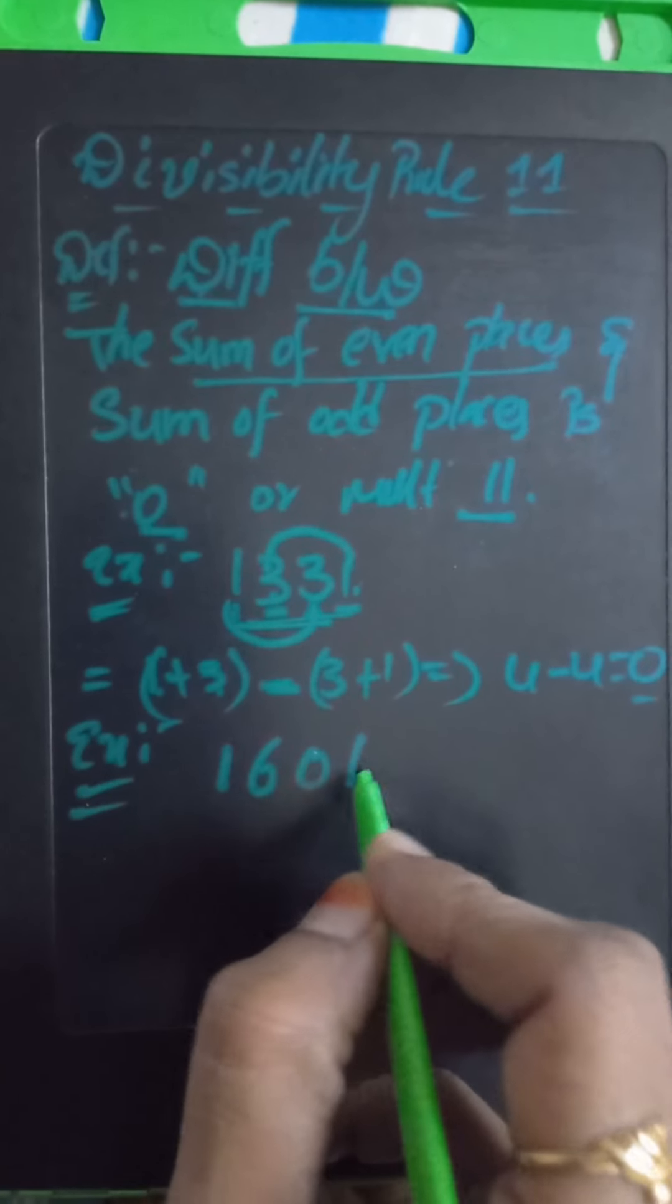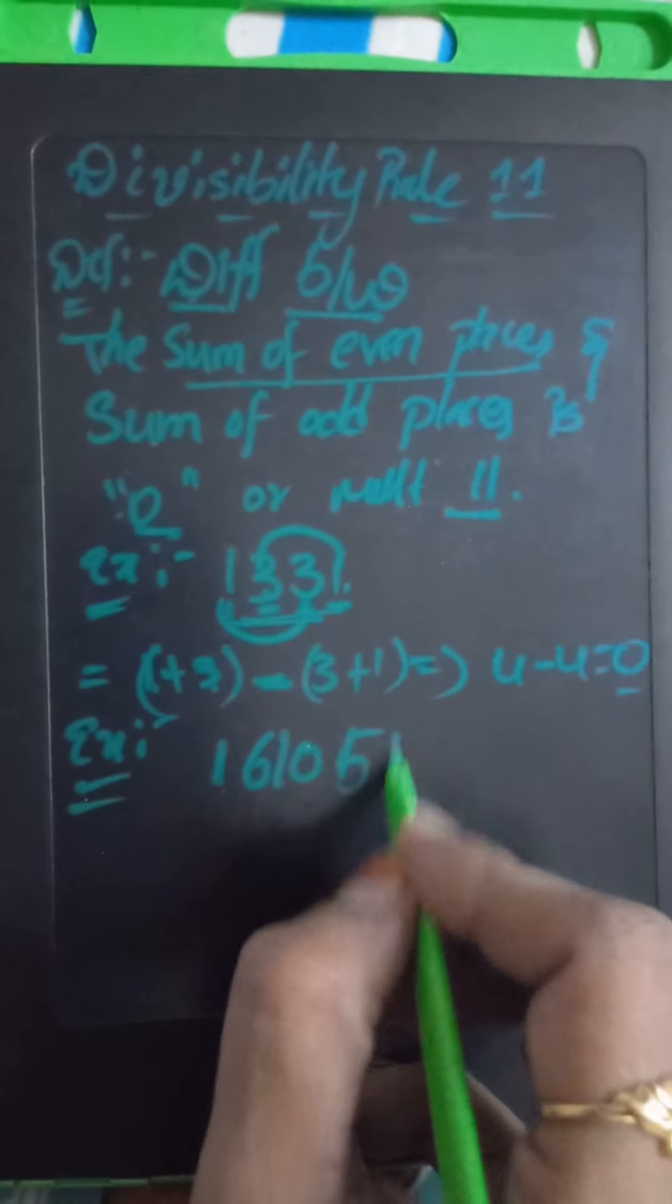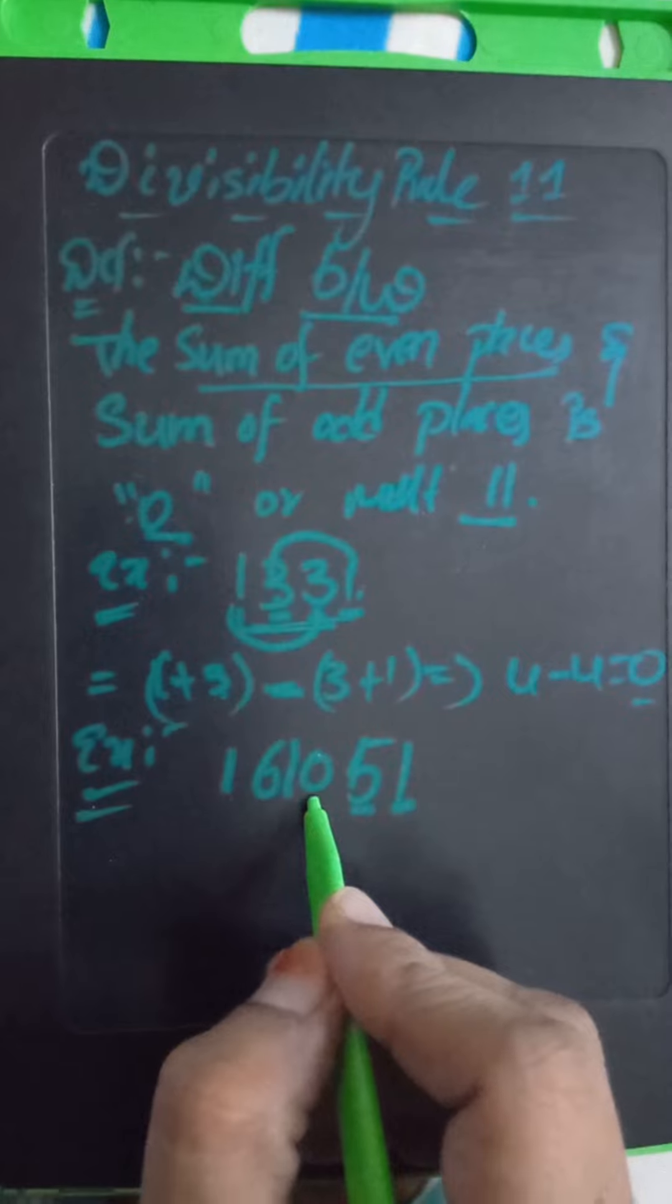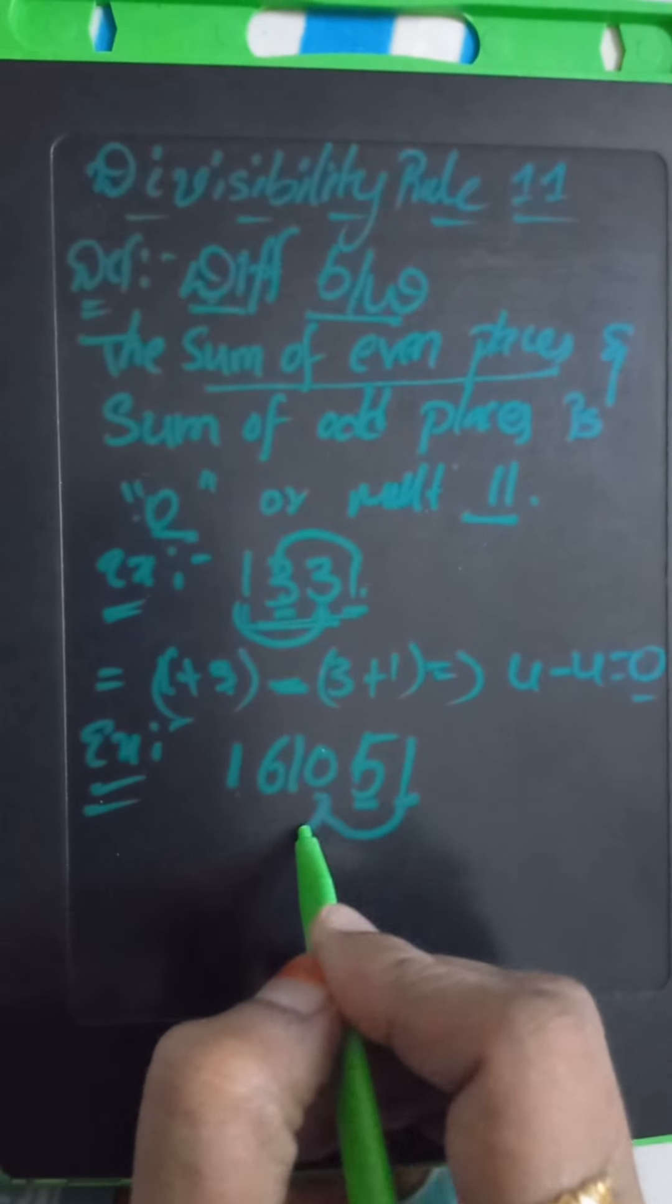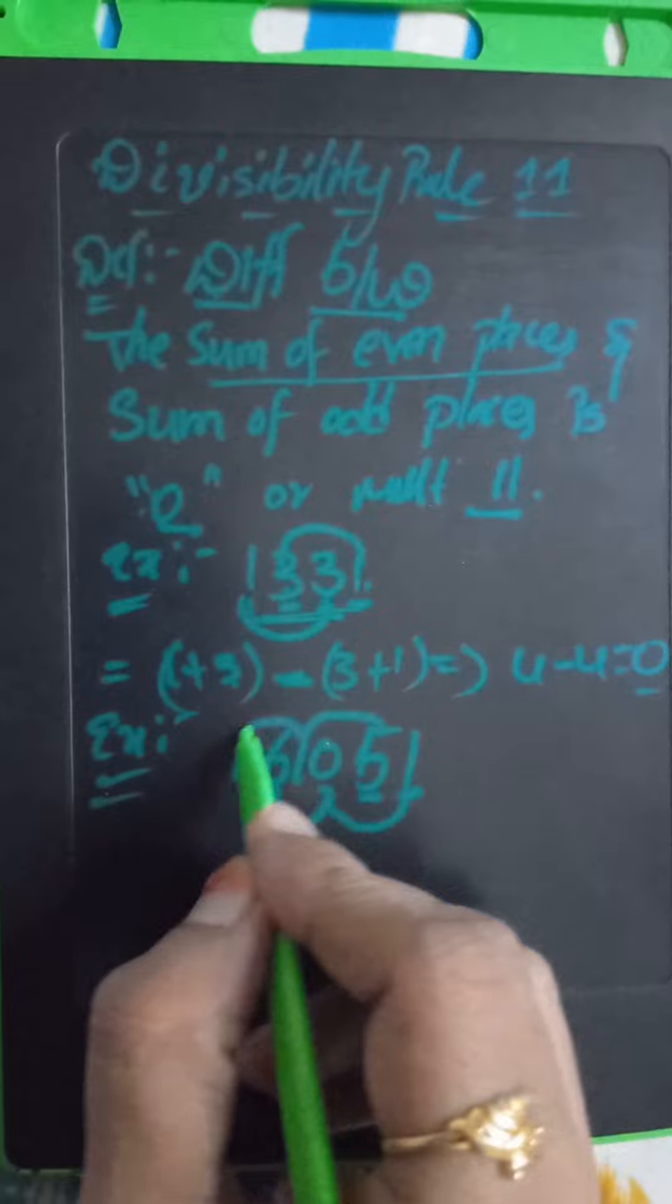1610551. This is odd, this is even place, odd place - like this you can take. 5, 1, 1.